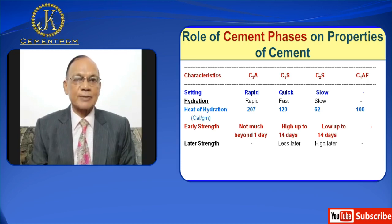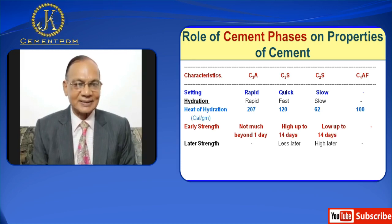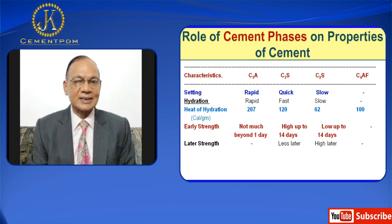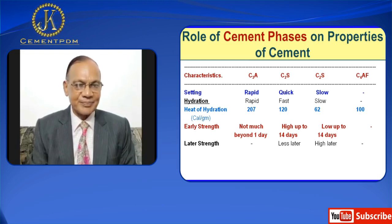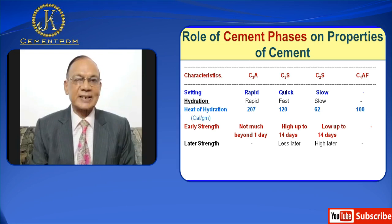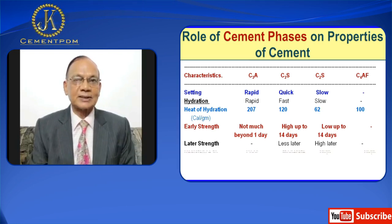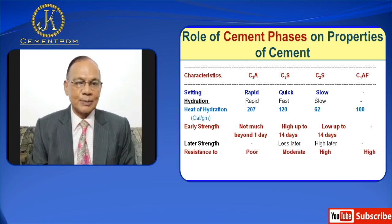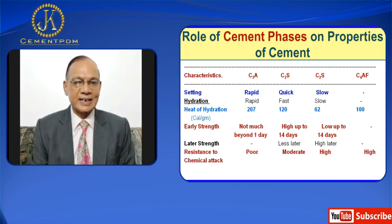C2S is responsible for high later strength. It contributes to high strength beyond 14 days. C3S contributes less to later strength while both C3A and C4AF have no role to play in later strength development.